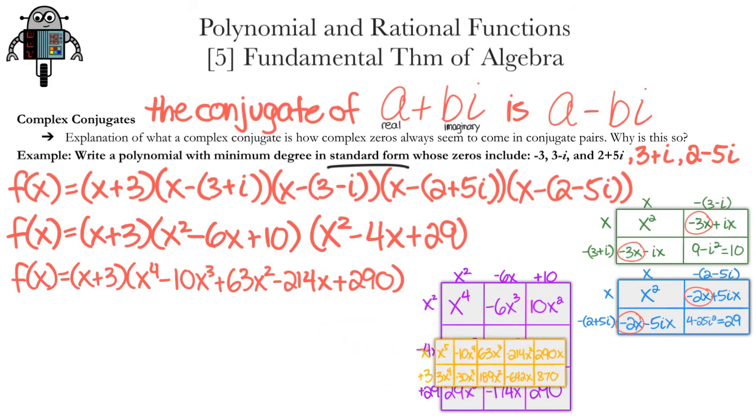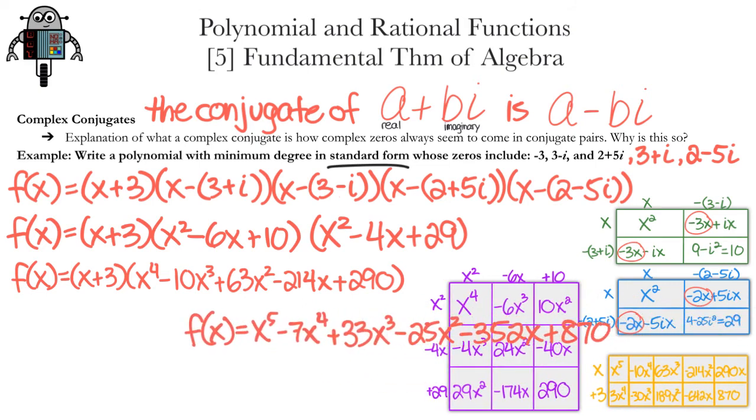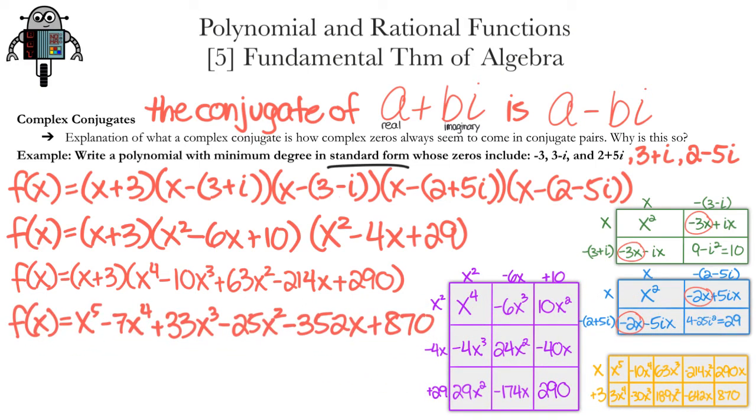Finally, f(x) can be written as x⁵ - 7x⁴ + 33x³ - 25x² - 352x + 870. We started with five zeros and we ended with a quintic polynomial.